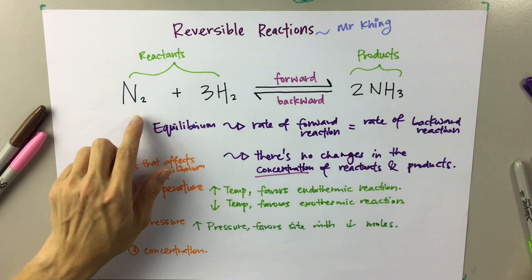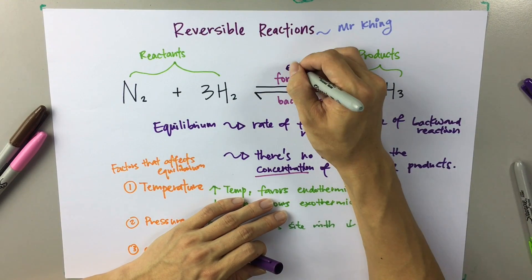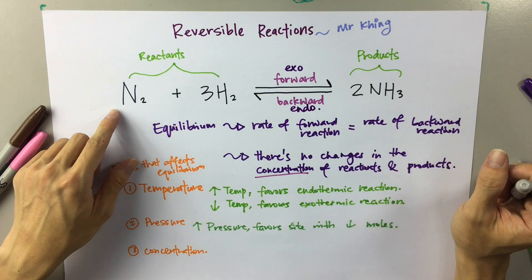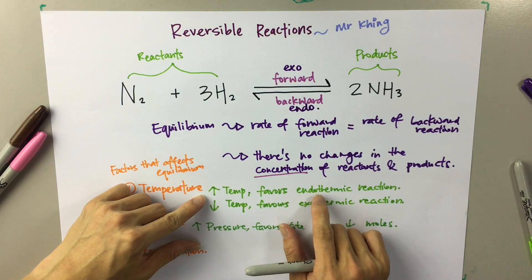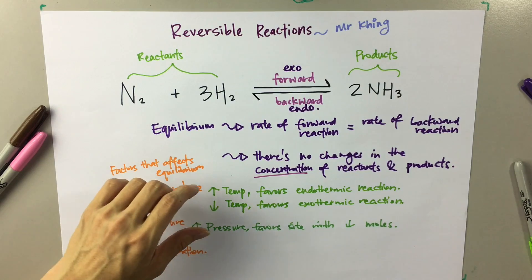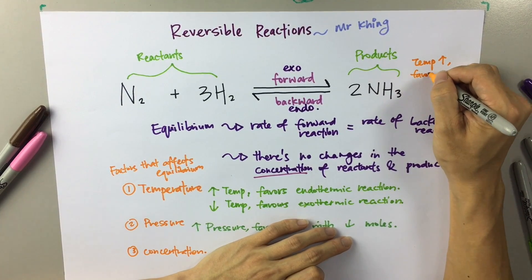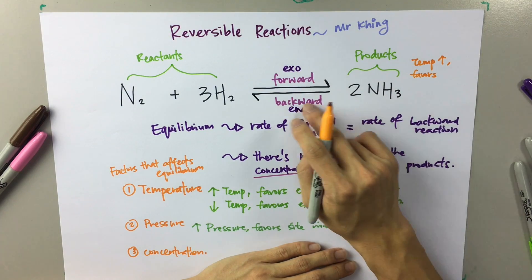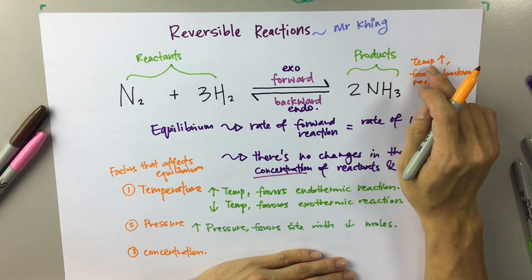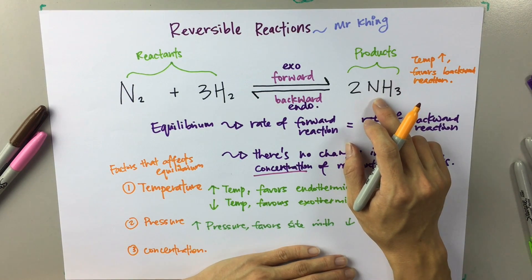For example, in this equation, the forward reaction is exothermic and the backward reaction is endothermic. So what will happen if the temperature increases? When you increase the temperature, it will favour the endothermic reaction. In this case, the endothermic reaction is the backward reaction. So it will favour the backward reaction, which means more reactants will be formed and the concentration of the products will decrease.